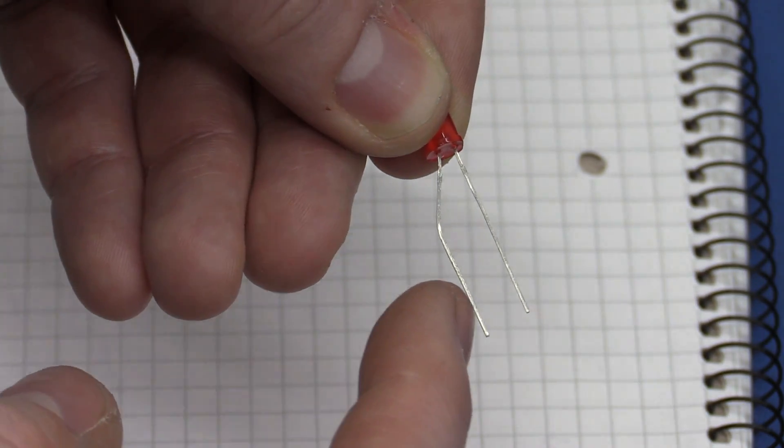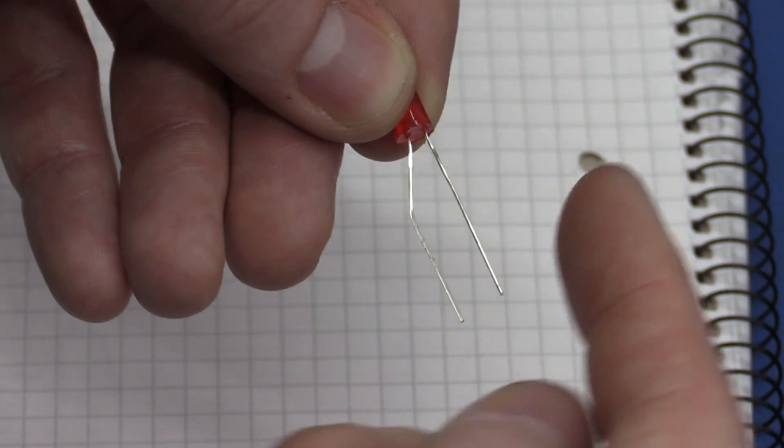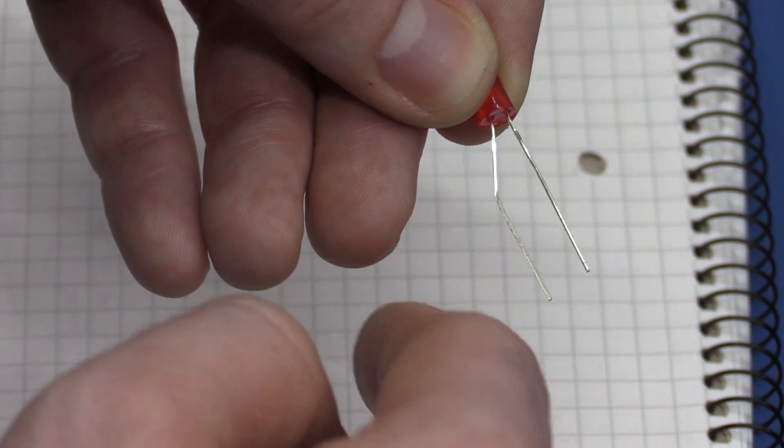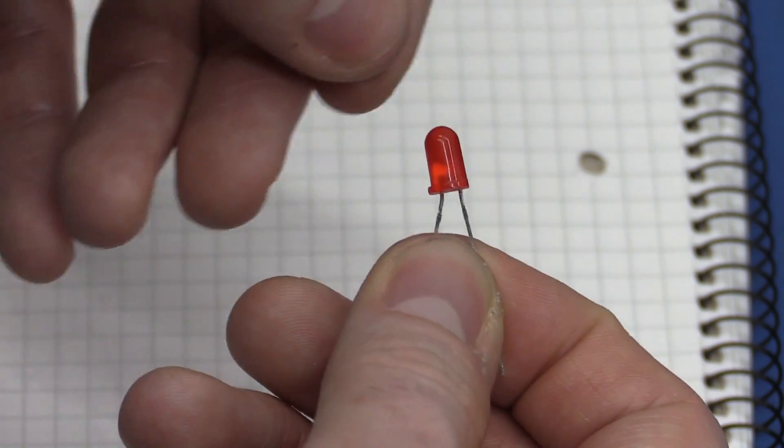So current will flow only into the anode and out of the cathode. If you try to push current the other way, so you have a positive voltage on this side and negative voltage here, nothing will happen, it simply does not allow the current to flow.